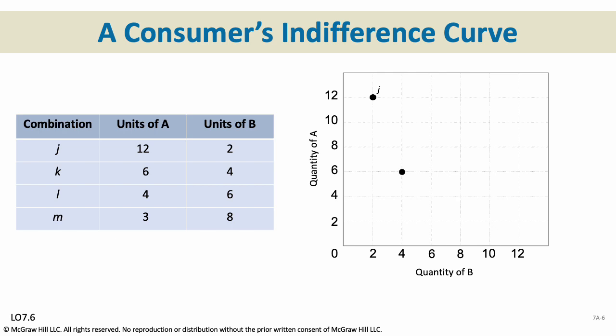Looking at the examples here, we get the same utility in combinations J, K, L, and M, mixing up A and B. So we can have 12A and 2B, 6A and 4B, 4A and 6B, or 3A and 8B — all of these give us the same amount of utility.